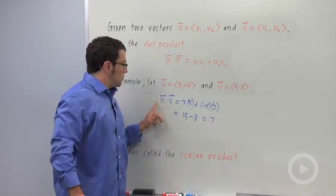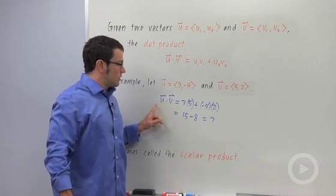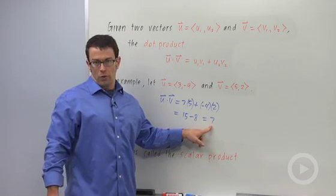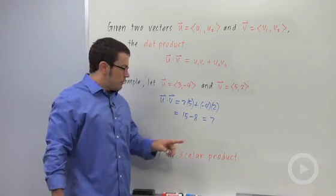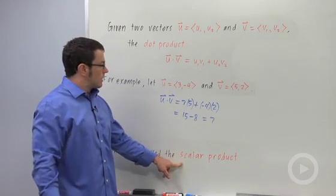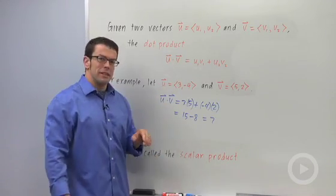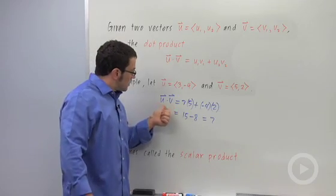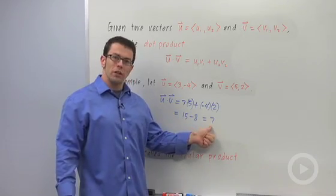So notice when you calculate the dot product of two vectors, you get a number, a real number, a scalar. So sometimes this is called the scalar product. But just remember, that's one of the strange things about the dot product is you're multiplying two vectors and getting a real number result.